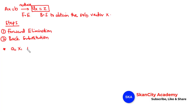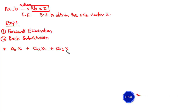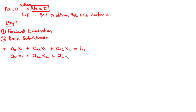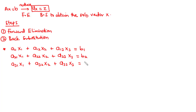We have a 3x3 system with equations: A11·x1 + A12·x2 + A13·x3 = b1, A21·x1 + A22·x2 + A23·x3 = b2, and A31·x1 + A32·x2 + A33·x3 = b3. To solve this system using naive Gaussian elimination, the first thing that comes to mind is to represent this system in an augmented matrix form.